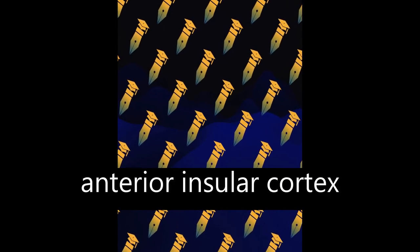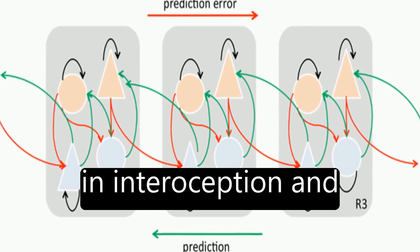Hierarchical predictive coding, dopaminergic signaling in cortex, the role of the anterior insular cortex in interoception and emotion.